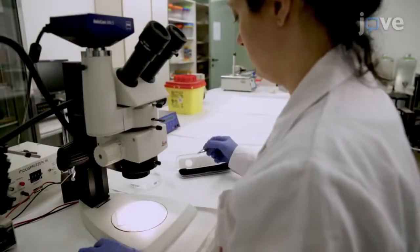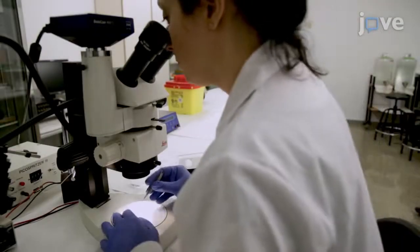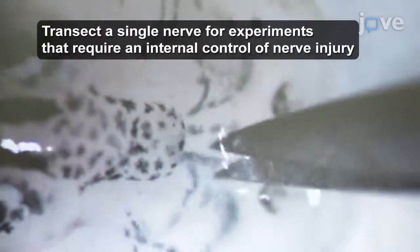For behavioral experiments, use Vanna scissors to transect both nerves to suppress all odorant information arriving to the olfactory bulb.